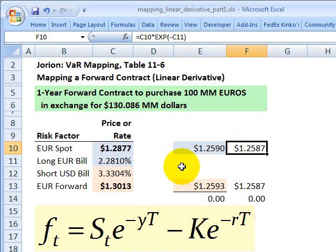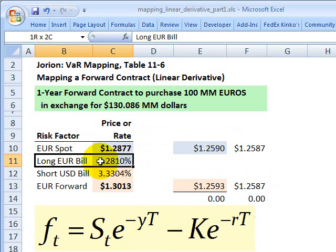But also notice we have two other factors. We have a foreign risk-free interest rate. That's a factor, a risk factor. If that changes, it's going to have an impact on the value of our forward contract, less than the spot currency exchange rate, but a factor nonetheless.